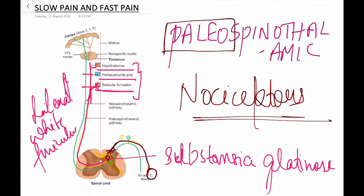After giving these collaterals, some fibers continue upwards and terminate in the non-specific nuclei located on the medial side of the thalamus, where they synapse with third-order neurons. These third-order neurons finally terminate in the cortex at area 3-1-2.